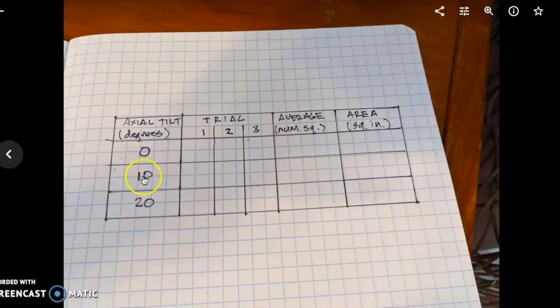So here I have zero, 10, and 20 degree axial tilt. Okay, after I do the zero degree tilt three times, then I will be able to find an average by adding the three up and dividing by three. Then I will get an area in square inches. These lab notebooks, if you double-check the front cover, says four squares per inch, so the area would be the average divided by four.